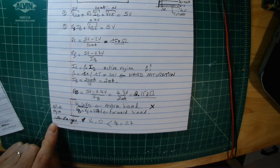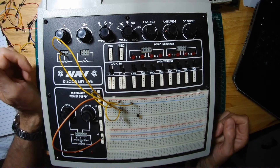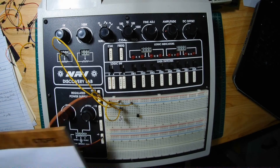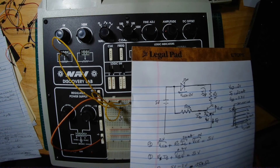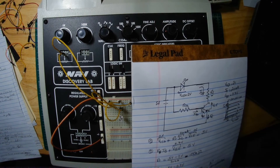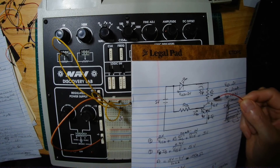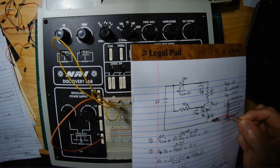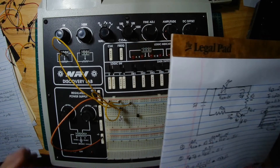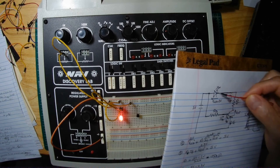Now that we have our Rb and Rc values, let's build the circuit. I've started making the circuit. First, I connected the LED and Rc, but instead of connecting to the collector I connected to the negative of the power supply just to verify that the LED is working — and it is.